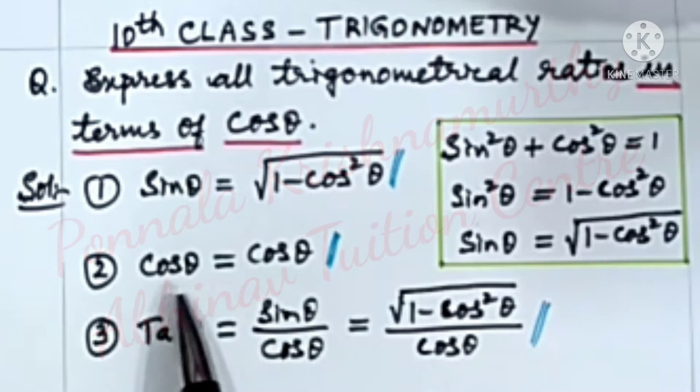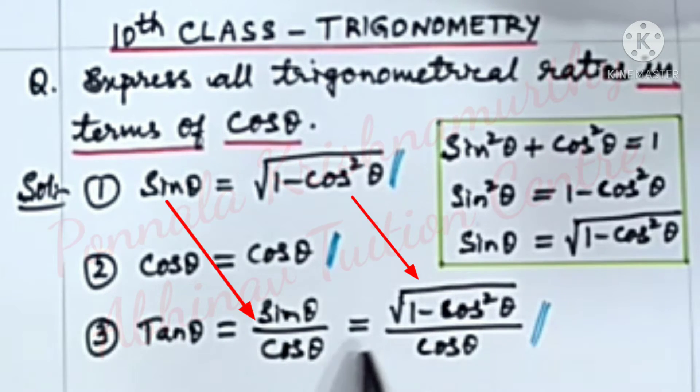Number 2, cos theta is equal to cos theta. Number 3, tan theta is equal to sin theta by cos theta, that is equal to under root 1 minus cos square theta by cos theta.